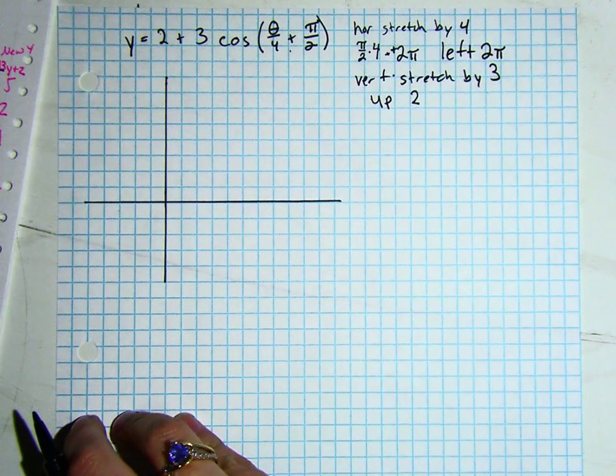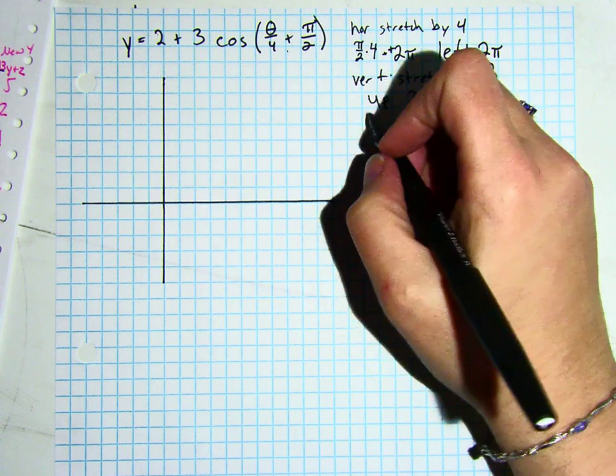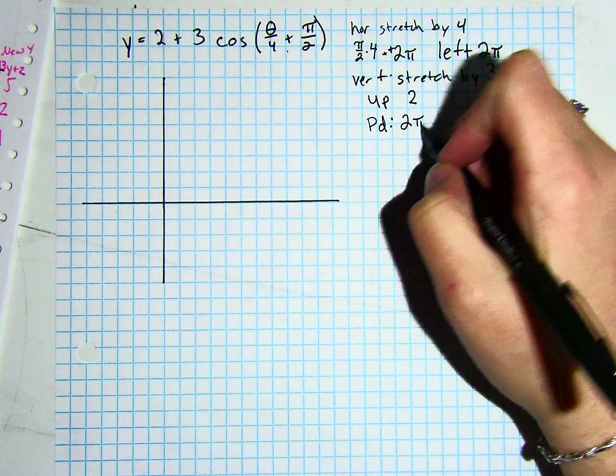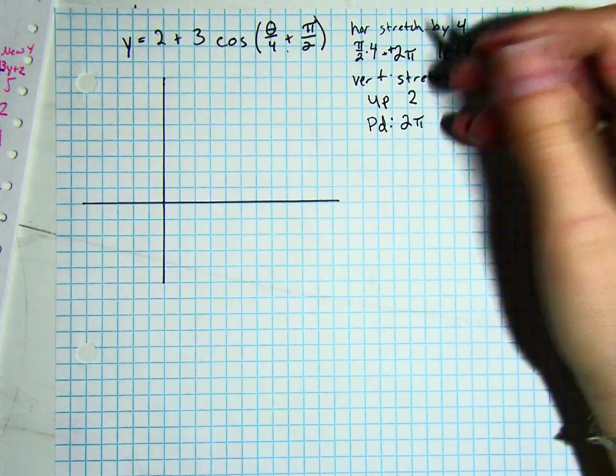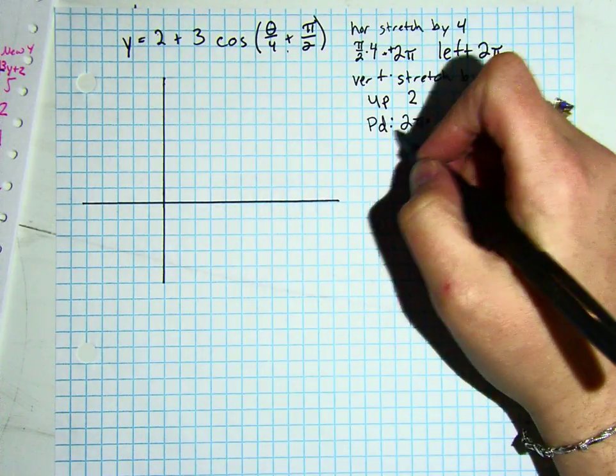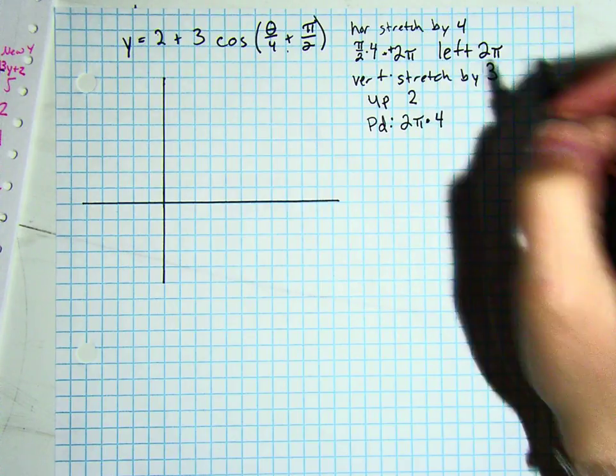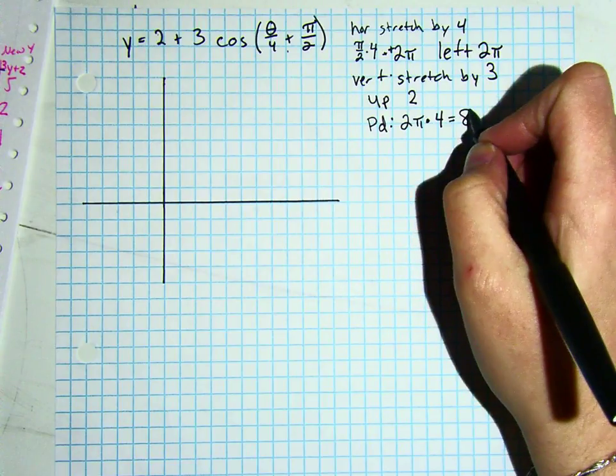So this means our period of cosine is normally 2 pi, but again our horizontal stretch affects our period. So we are going to multiply our normal period of cosine by our horizontal stretch factor, so 2 pi times 4 is 8 pi.